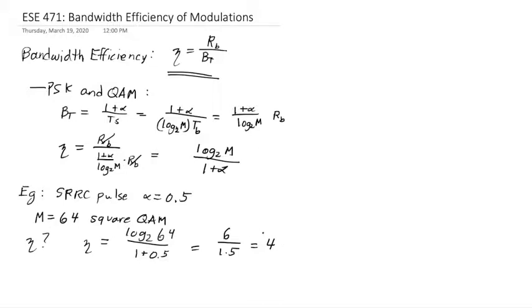Or 6 divided by 1.5 or just 4. That means that every hertz of bandwidth that I have, I can send 4 bits.